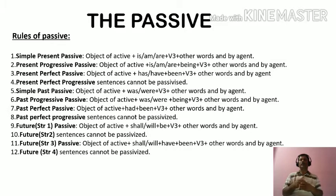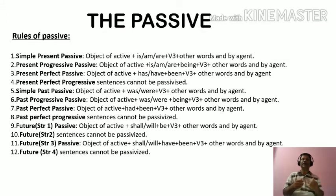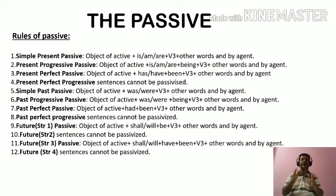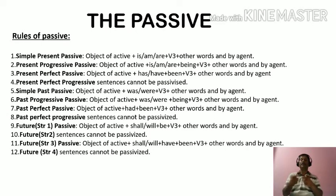When we want to make the subject of the sentence the doer of the action, the sentence is said to be in active voice. And when we want to make the subject of a sentence the receiver of the action, the sentence is said to be in passive voice. In voice change, the verb must be a transitive verb because the object of the active will be the subject of the passive.